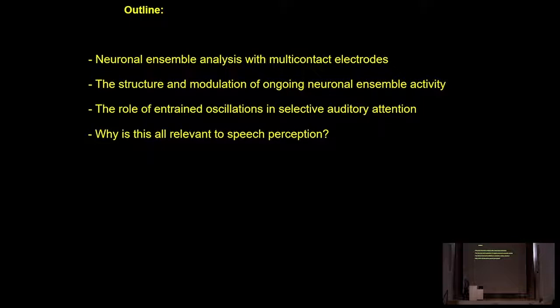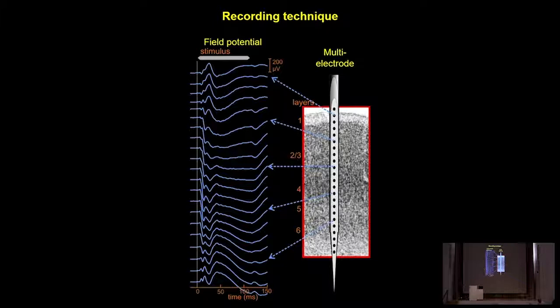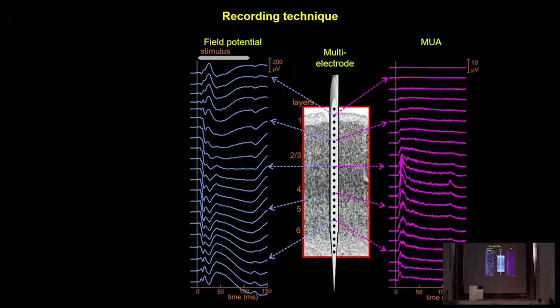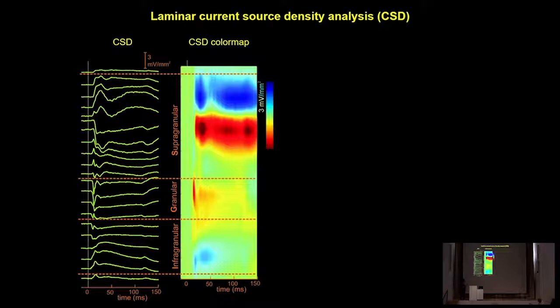On each experimental day we lower one or two linear array multi-electrodes into auditory cortical areas or pulvinar regions, positioning them based on auditory responses to broadband noise bursts. From the field potential response profiles and multi-unit activity, we calculate one-dimensional current source density (CSD) profiles offline to eliminate volume conduction effects. These CSD profiles allow us to reliably determine the boundaries of the supragranular, granular, and infragranular layers in our cortical recordings.